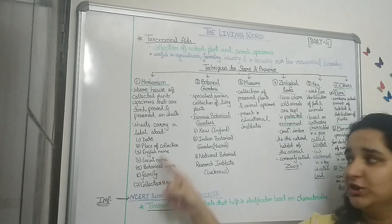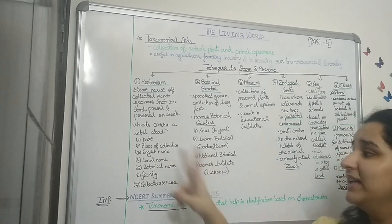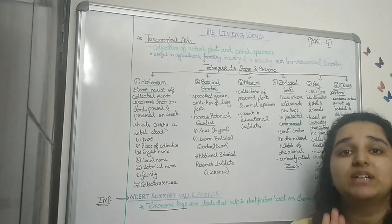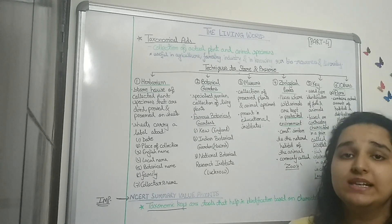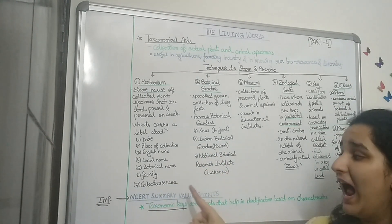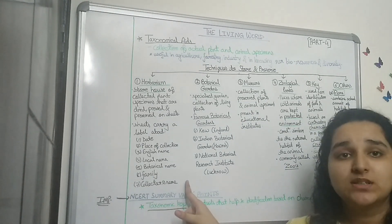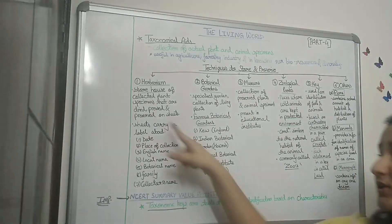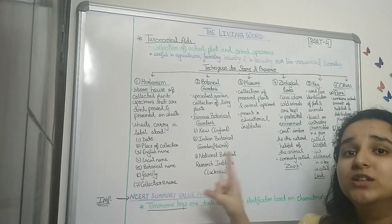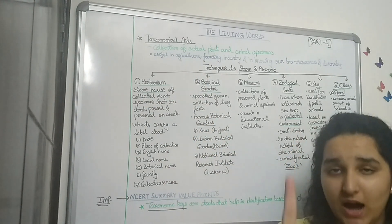The sheets on which plant specimens are preserved carry certain labels. These include: the date the specimen was collected, the place of collection, the English name of the plant, the botanical name, the local name, and the family of that plant. The collector's name is also mentioned, giving credit to the person who collected, preserved, and researched that specimen.